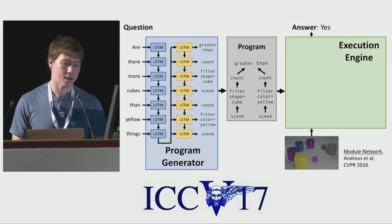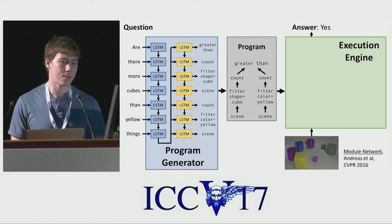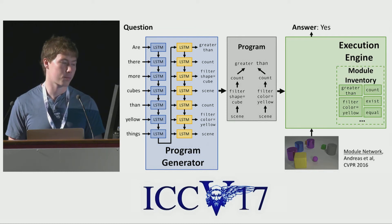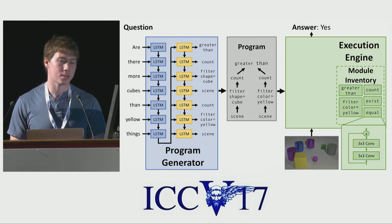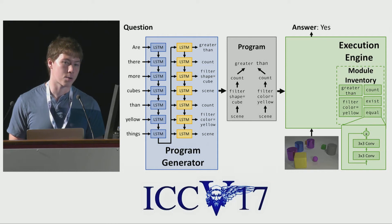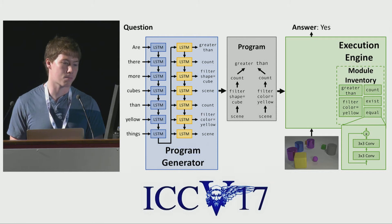The execution engine, on the other hand, is a module network, which is a really cool framework proposed by Andreas et al. at CVPR 16. In the module network formulation, the execution engine contains a module inventory, where for each function in the functional programming language of the CLEVR world, we have one little module. Each of these modules is itself a tiny neural network chunk. In our implementation, all of our modules are a single residual block with two convolutional layers. All of these modules share the same architecture; they only vary in their parameters, and through the training process, these parameters are specialized to the task that these modules should perform.